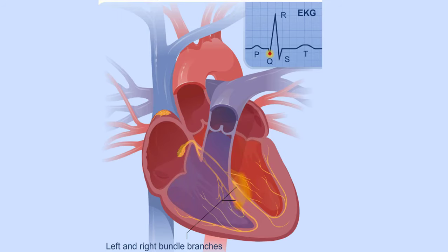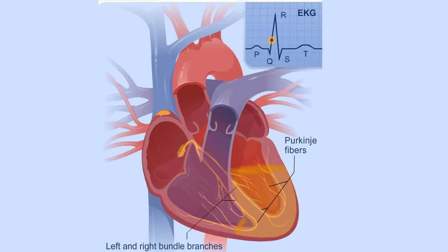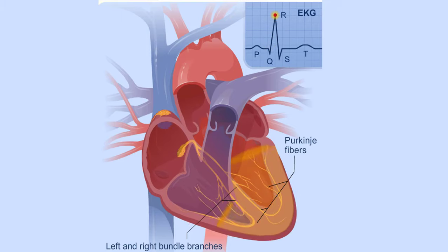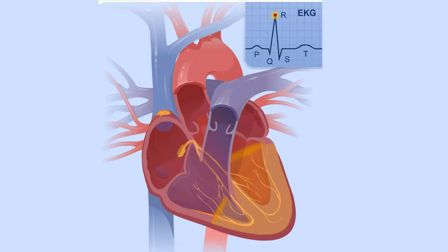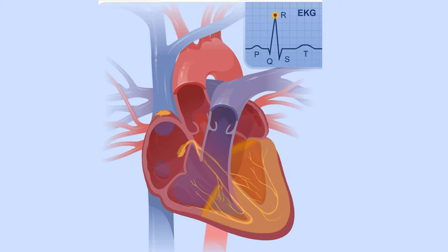The signal leaves the left and right bundle branches through the Purkinje fibers that connect directly to the cells in the walls of your heart's ventricles. The signal spreads quickly across your heart's ventricles, and as it spreads across the cells of the ventricle walls,